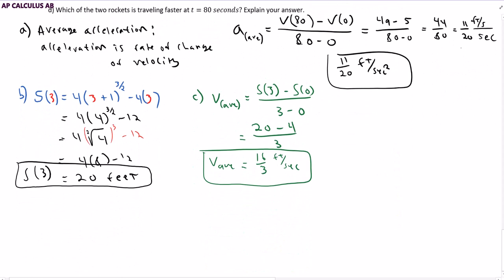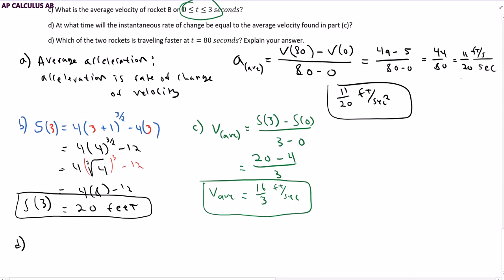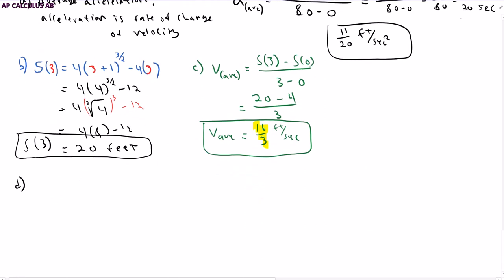Continuing, part D asks, at what time will the instantaneous rate of change be equal to the average velocity found in part C? So to find instantaneous rate of change, that is the derivative. That's the instantaneous velocity. And I want to know when will it equal this value. So first I need to find the instantaneous rate of change. I need to find S'(T). So we need to take the derivative.